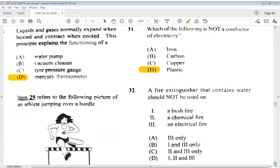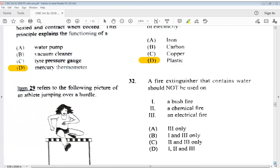32 says, a fire extinguisher that contains water should not be used on 1, a bushfire, 2, a chemical fire, 3, an electrical fire. So our answer would be 2 and 3 only. So that would be C.